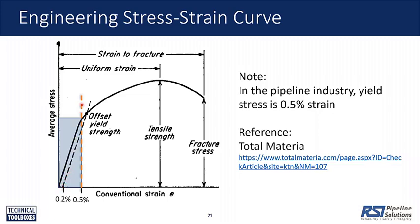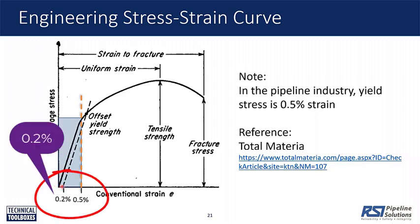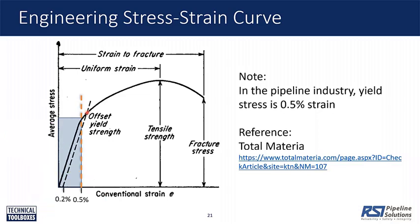Structural engineers have a different way to define yield strength — it's called the 0.2% offset. Instead of 0.5%, they start at 0.2%, but the line is not vertical; it parallels the initial part of the curve, and wherever it crosses the stress-strain curve that becomes the yield strength. So there are different definitions and the end result can be slightly different. When you look at a lab report, make sure you pay attention to how they defined the yield.